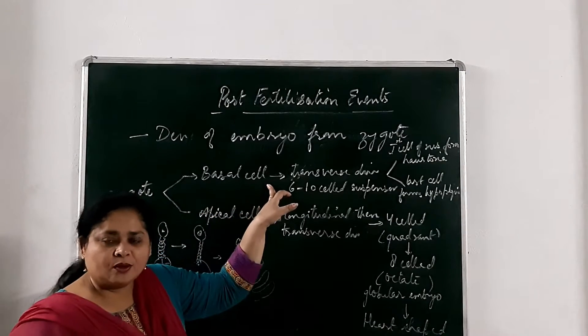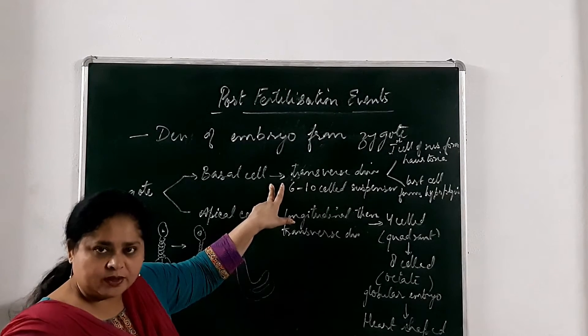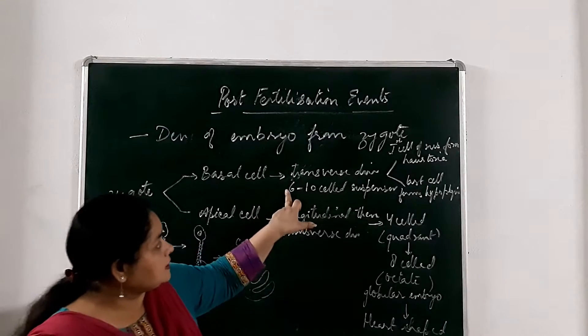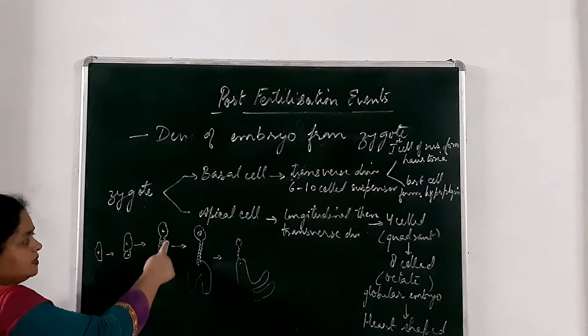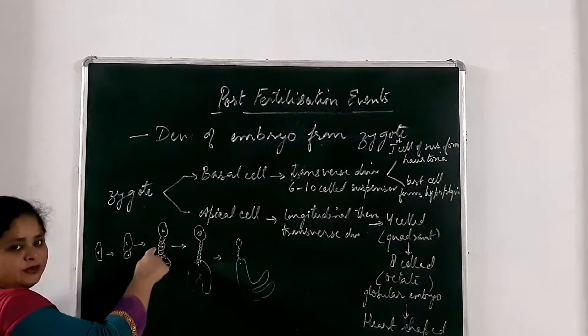Now this basal cell undergoes the transverse division, 2 or 3 subsequent divisions in which it forms a 6 to 8 cell suspensor. This is known as suspensor.